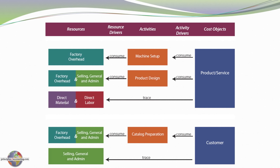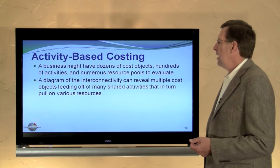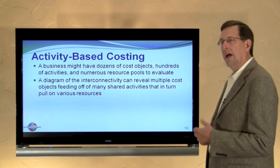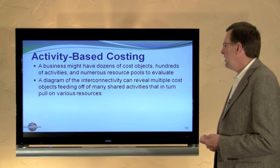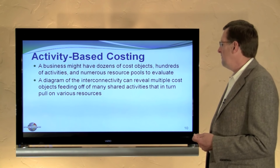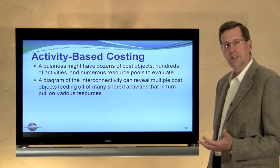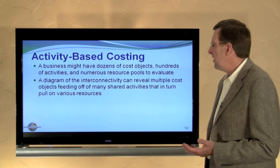Some costs — in this case, for example, material and labor — are drawn or traced directly into the product or services; there's really not an activity related to that. The product or service actually encapsulates those particular resources. A business may have dozens of cost objects, hundreds of activities, and numerous resource pools. A diagram of the interconnectivity can reveal multiple cost objects feeding off of many shared activities that pull on various resources, meaning this can become fairly complex.